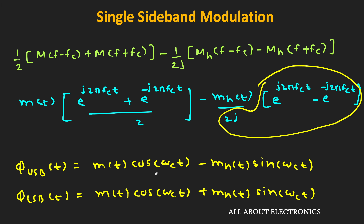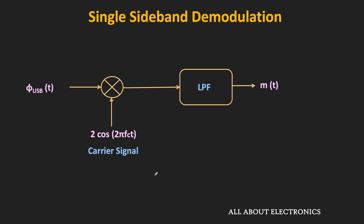With the help of this mathematical expression, we will understand how to generate the SSB signal. But before that, let us see how we can demodulate the SSB signal. Since the carrier is not transmitted in single sideband modulation, at the receiver we use synchronous demodulation.